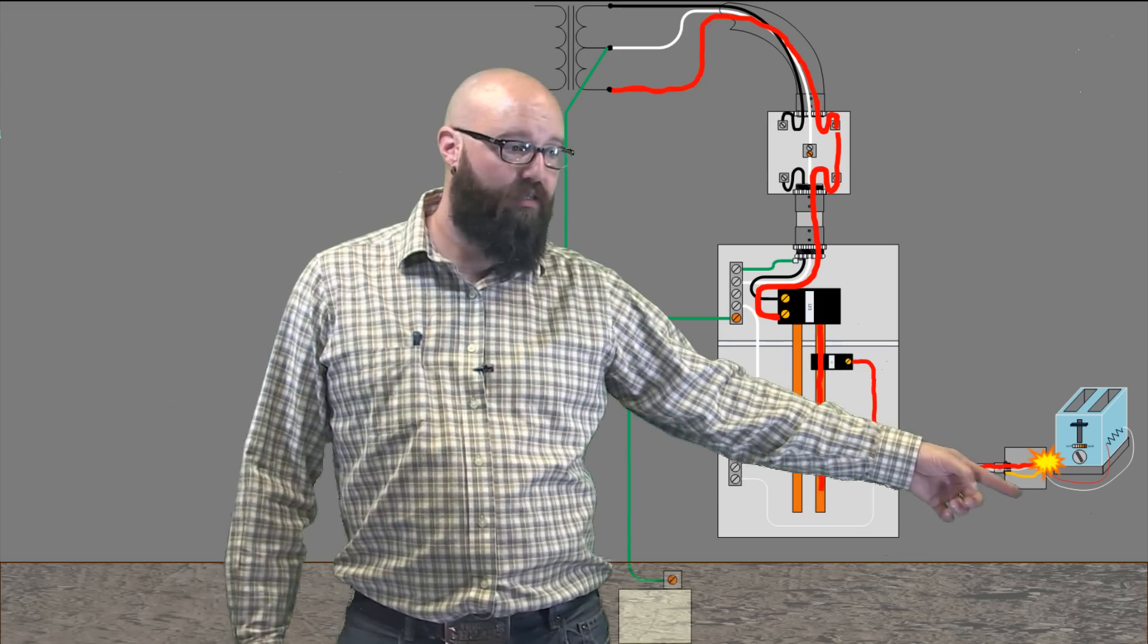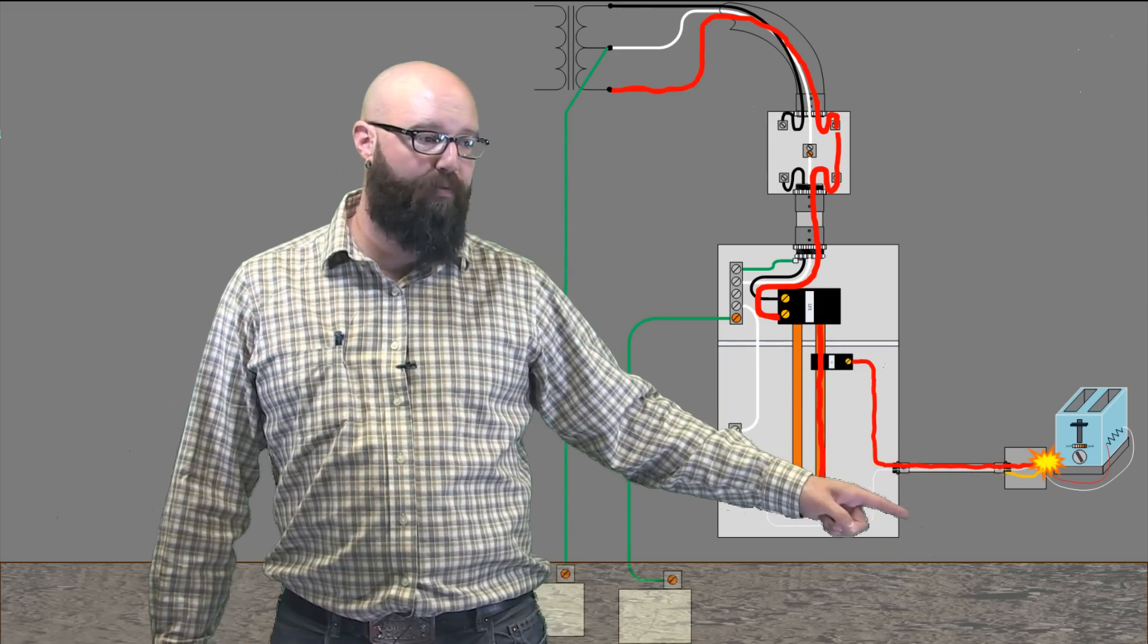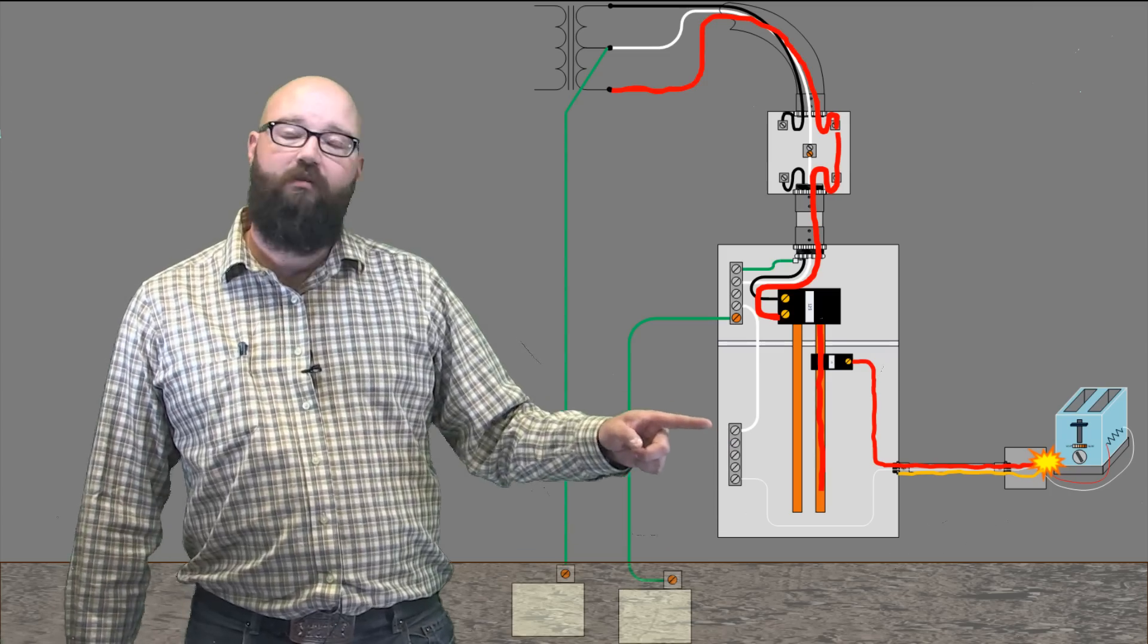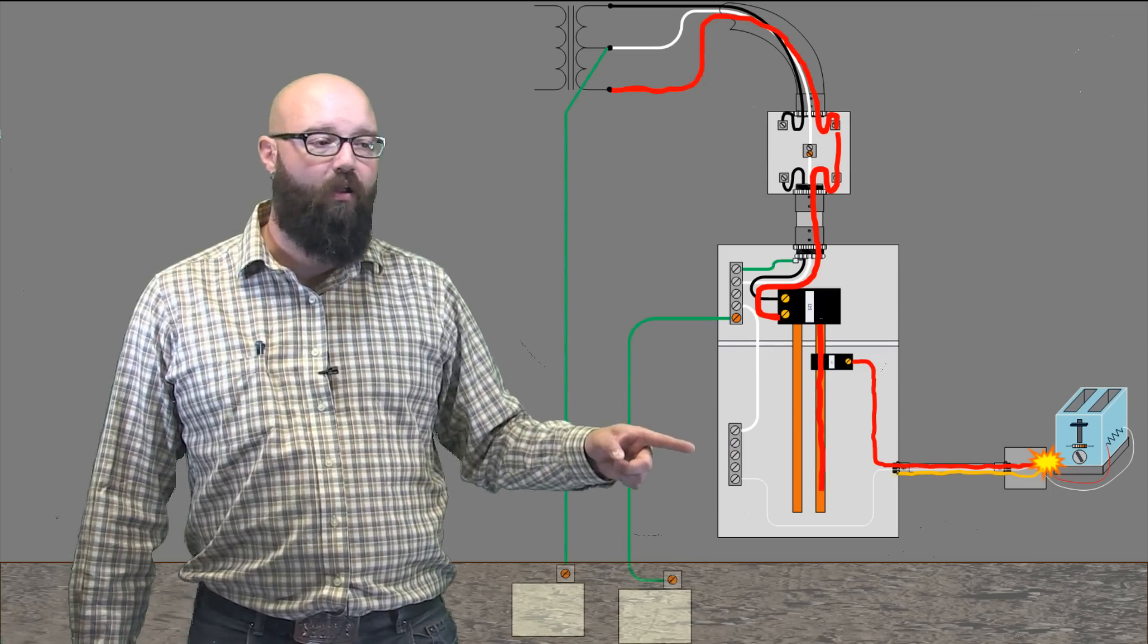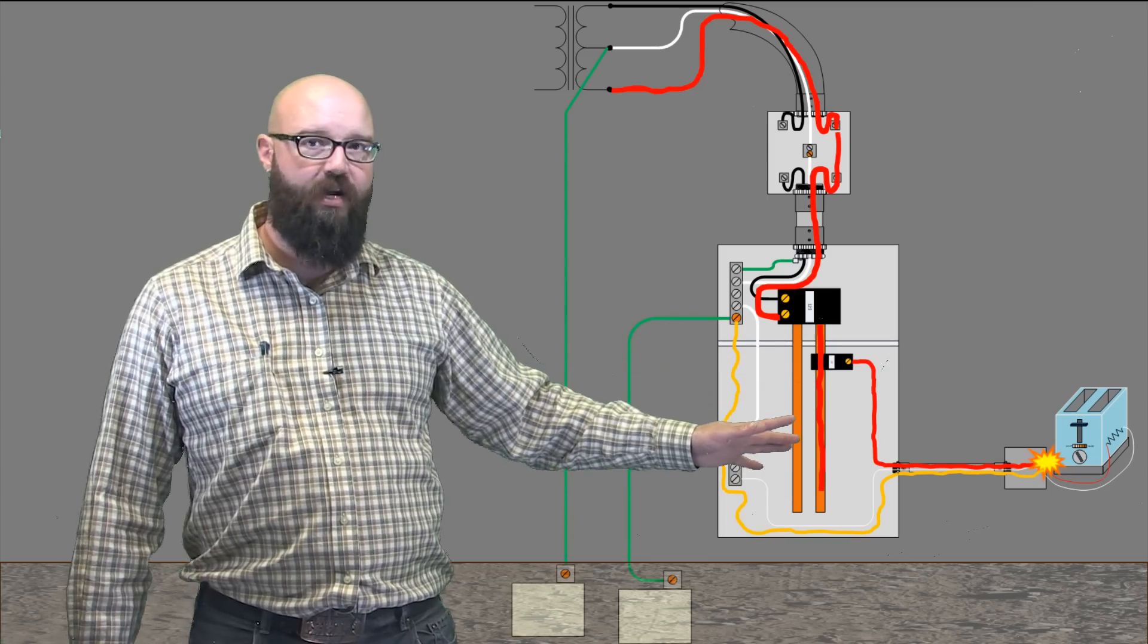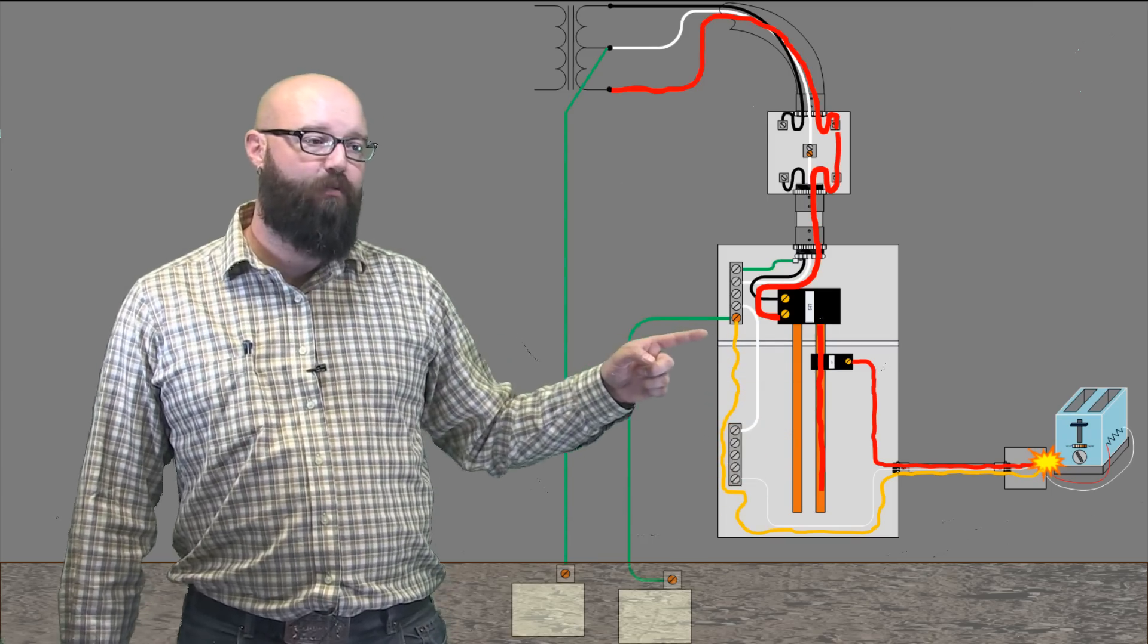So it comes back on the box, lock nuts and set screws are done up, makes its way back on this conduit, this panel is metal, and it conducts as well. So that fault current can make its way back in the actual panel. It's not going back on the identified anymore. And it gets to this point.